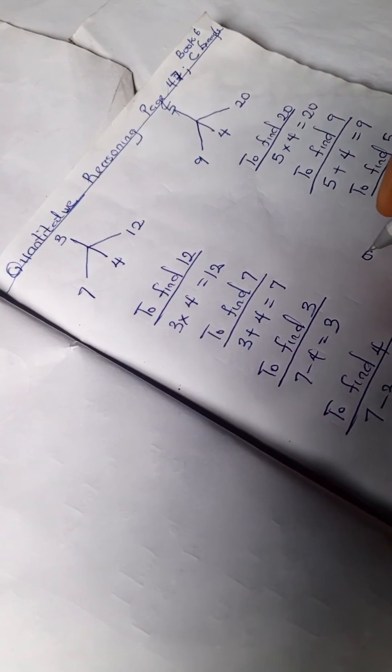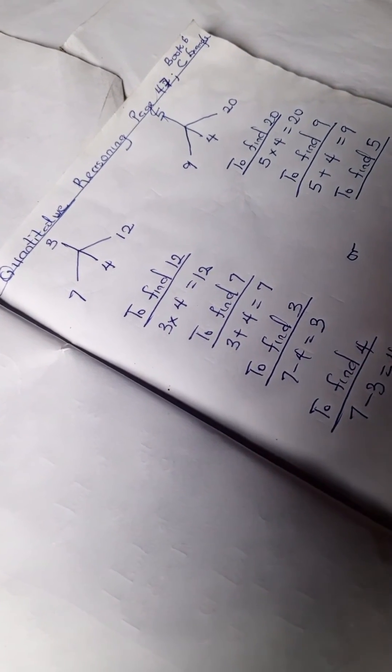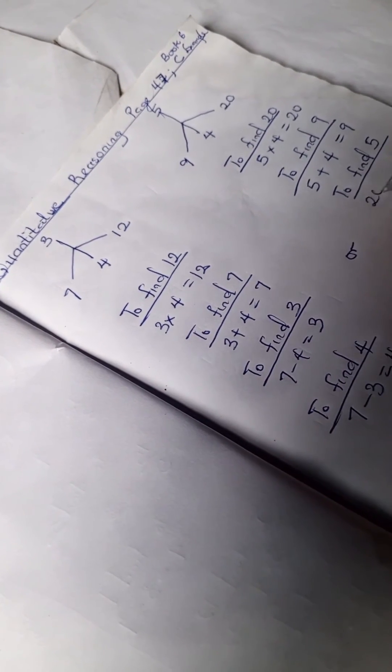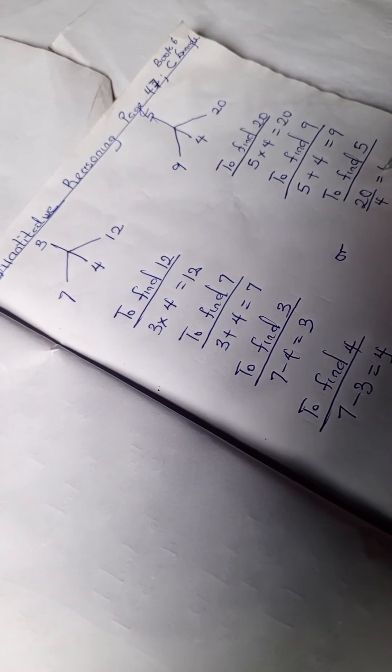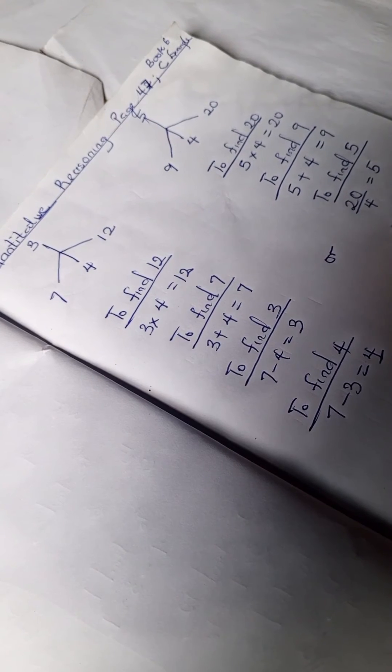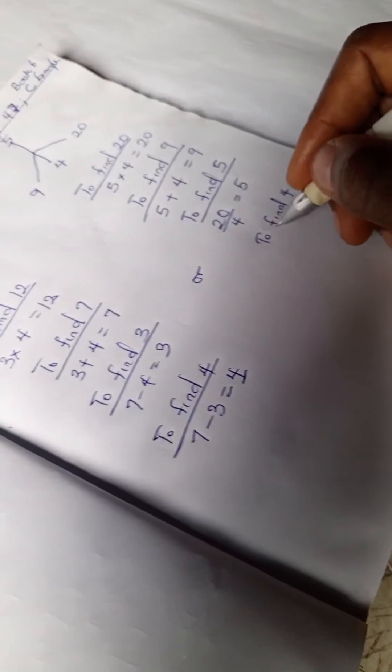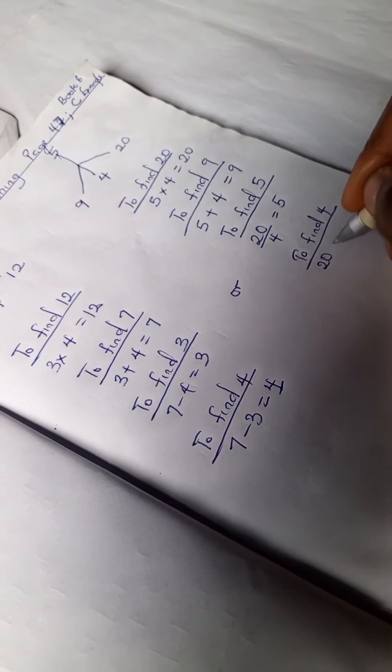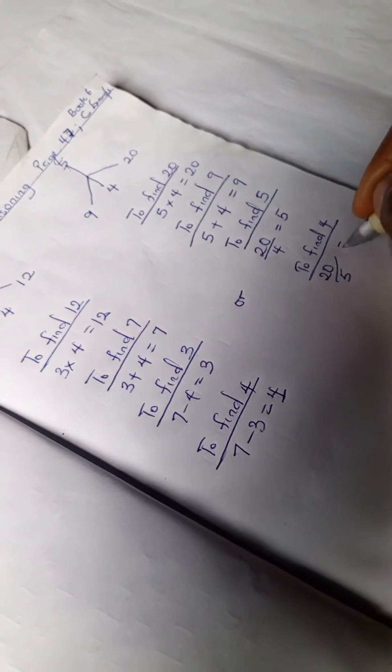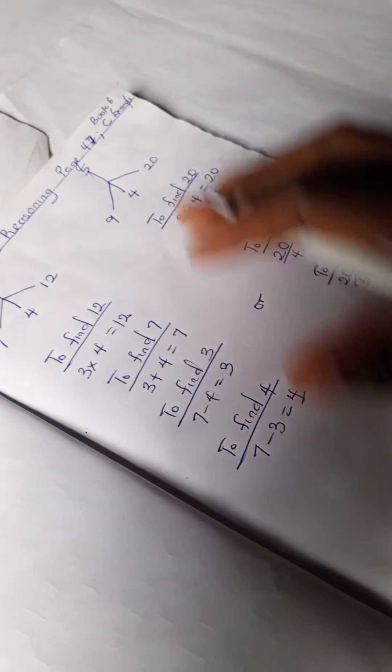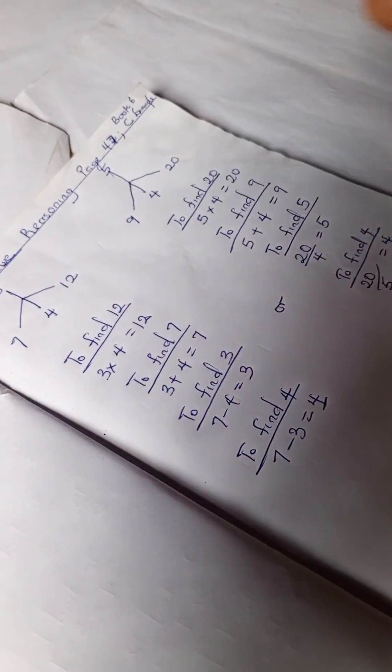To find 5, we can use this, or we can say 20 divided by 4 is 5. Or to find 4, we can also say 20 divided by 5 is 4. So irrespective of this method you use, you would also get the answer.